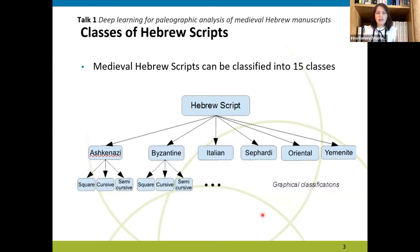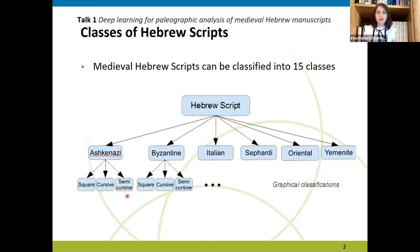Medieval Hebrew scripts can be classified into 15 classes. At the first level of hierarchy, we have a regional classification, as according to paleographic experts, script types evolved differently in different regions. So we have Ashkenazi, Byzantine, Italian, Sephardi, Oriental, and Yemenite scripts. At the second level of hierarchy, each type is divided into three subtypes: square, cursive, and semi-cursive. There are 15 classes, not 18, because some scripts don't have a cursive or semi-cursive version.